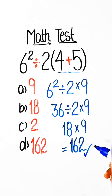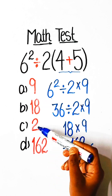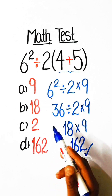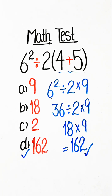So from the options — 9, 18, 2, or 162 — Option D: 162 is the correct answer. Please subscribe to my YouTube channel for more such content. Thanks for watching.